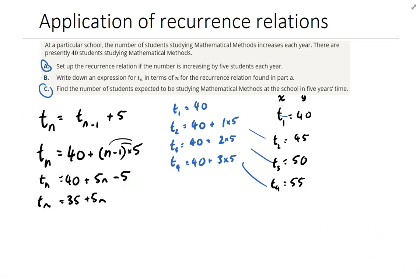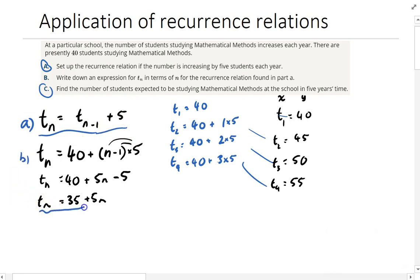So to recap: the answer to part A was the recurrence relation T(N) = T(N−1) + 5, and the answer to part B is T(N) = 35 + 5N. This is probably a good amount of working for a question like part B.